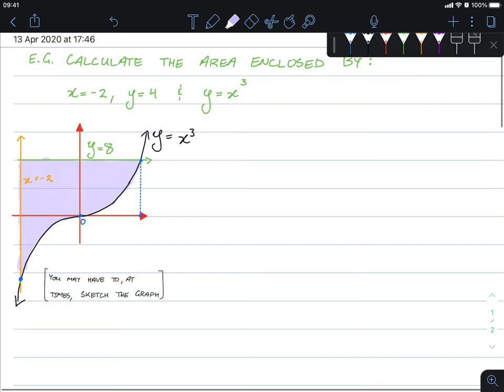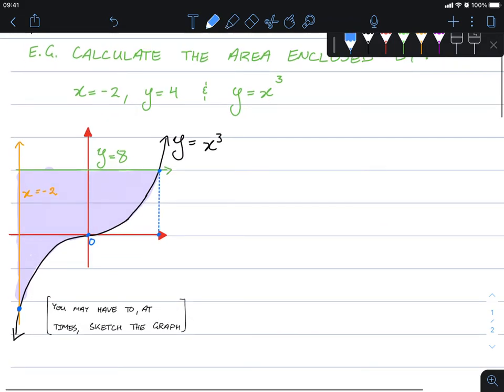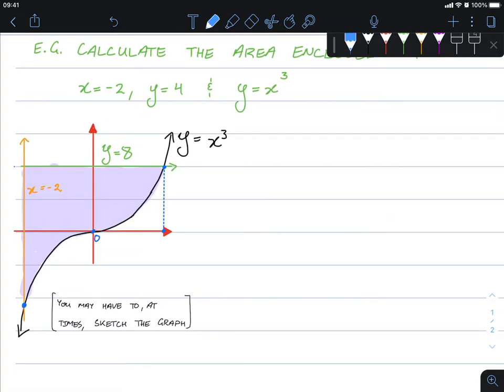Now it may seem rather difficult, but really there are only two functions here. We have the function y equals 8, that straight line, and the bottom function y equals x cubed.